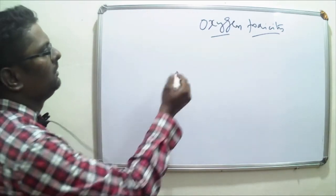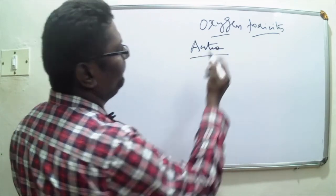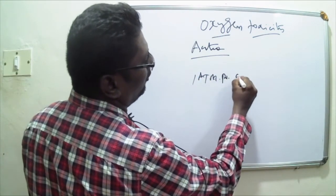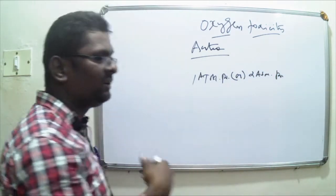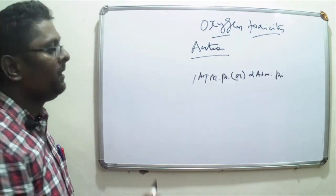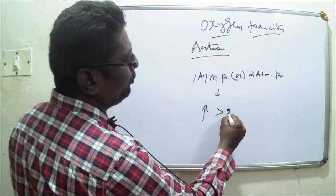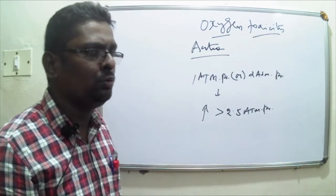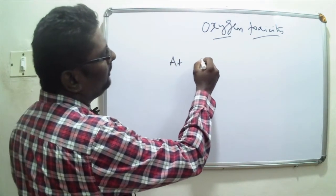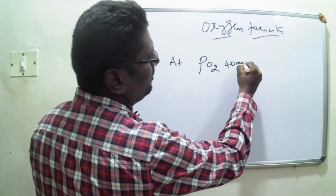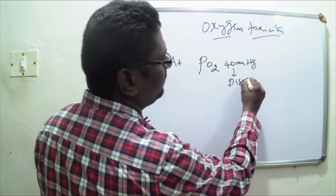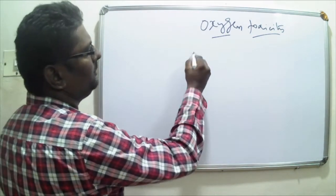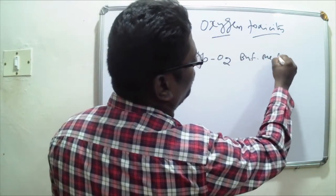Now let us discuss acute toxicity. When we give oxygen at one atmospheric pressure or two atmospheric pressure, it is generally well tolerated by most individuals. But when we increase the pressure above 2.5 atmospheric pressure, the tissue cellular damage starts to happen. At normal cellular PO2 of 40 millimeters of mercury, the amount of dissolved oxygen is very low. When oxygen is delivered at high atmospheric pressure, the hemoglobin oxygen buffering mechanism fails.